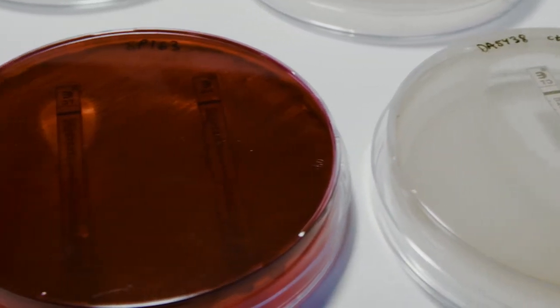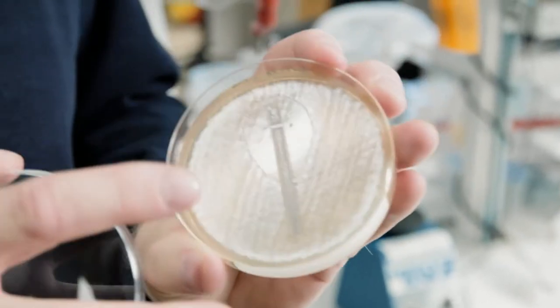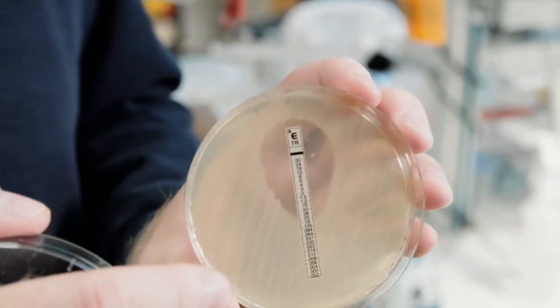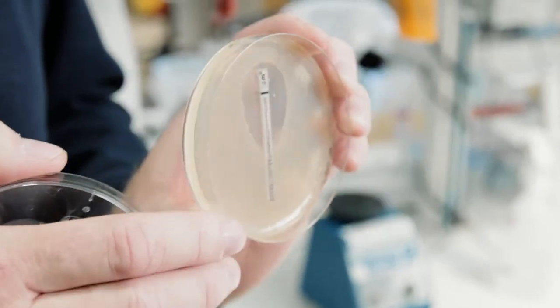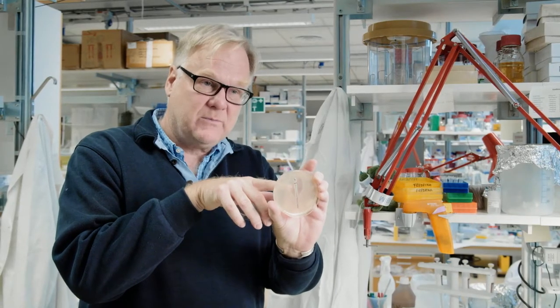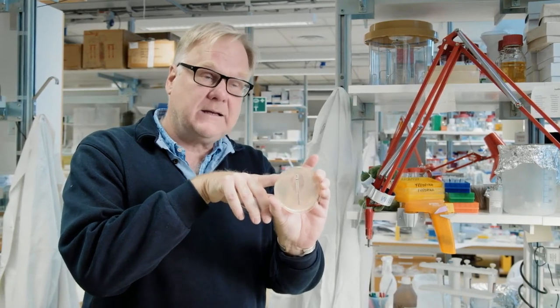What you can see on this agar plate, we have spread bacteria and also this plastic stick that contains antibiotics. And if the bacteria are susceptible, you are going to get this clear zone. So this is a susceptible bacteria, susceptible to this specific antibiotic.